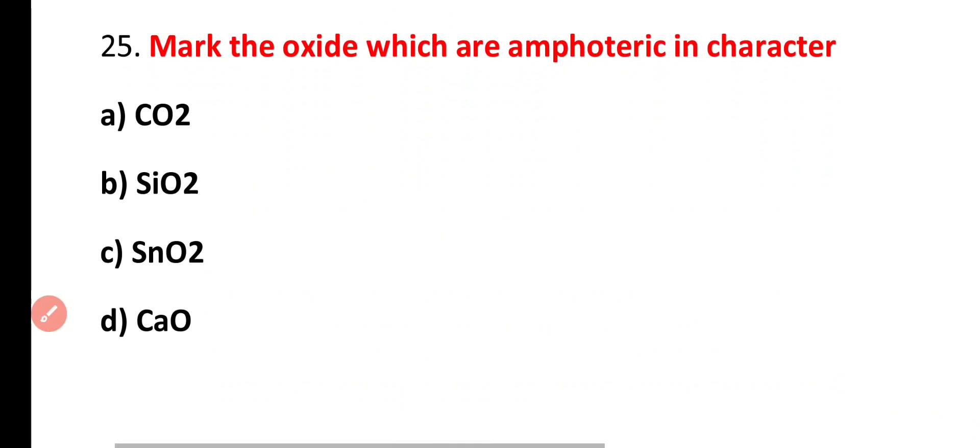Question 25. Mark the oxide which are amphoteric in character. Carbon dioxide, silicon dioxide, tin oxide and calcium oxide. The correct answer is option C. Carbon dioxide and silicon dioxide are acidic, while calcium oxide is basic. Tin oxide has amphoteric character.